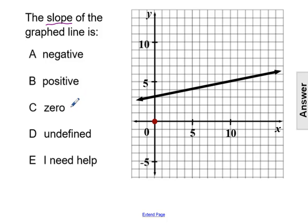The third choice of zero means the line would be horizontal. And the fourth choice of undefined means that the line would be vertical.